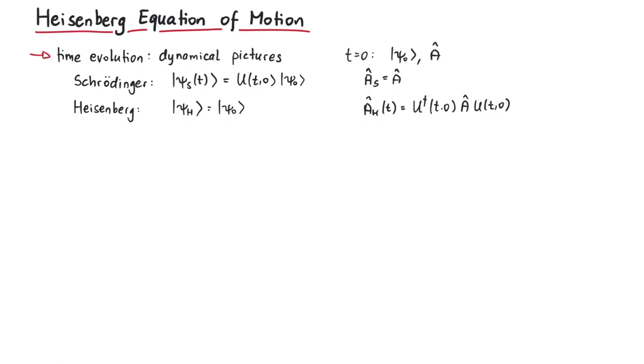The Schrödinger picture performs time evolution according to the time dependent Schrödinger equation. So, since the operator a in the Heisenberg picture depends on time, what is the corresponding equation that determines the time evolution? The answer is the Heisenberg equation of motion.